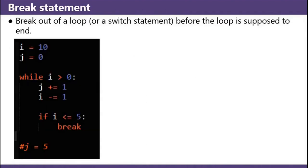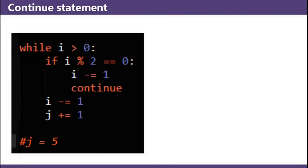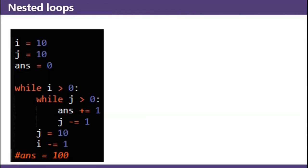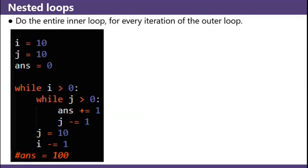Break statement: break out of a loop or a switch statement before the loop is supposed to end. In this example on the left, if i is less than or equal to 5, then it breaks out of the loop early and j only gets to 5. Continue statement: continue the next iteration of a loop, possibly skipping parts of a loop. In this example, j doesn't get incremented if i is a multiple of 2. Nested loops do the entire inner loop for every iteration of the outer loop. So in this case, j gets iterated 10 times for every iteration of the outer loop — j happens 100 times because there's a multiplication relationship between the inner and the outer loop.